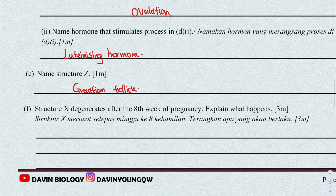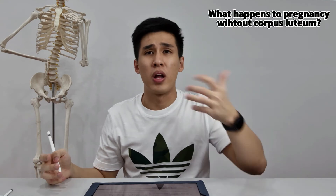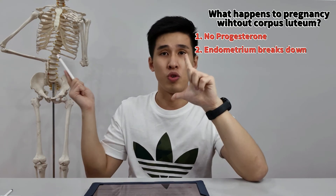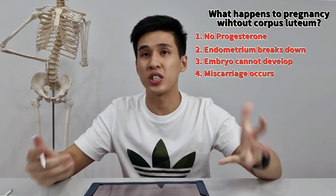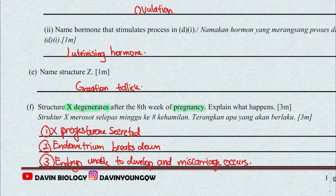The last question: structure X — the corpus luteum — degenerates after eight weeks. Explain what happens. This is not good because the corpus luteum is the one that secretes progesterone, which is needed for the endometrium and for the embryo to develop. Without corpus luteum, there will be no progesterone. The endometrium will break down and the embryo cannot develop. Hence, miscarriage occurs because the baby will fall out together with the endometrium — that's the end of the pregnancy.